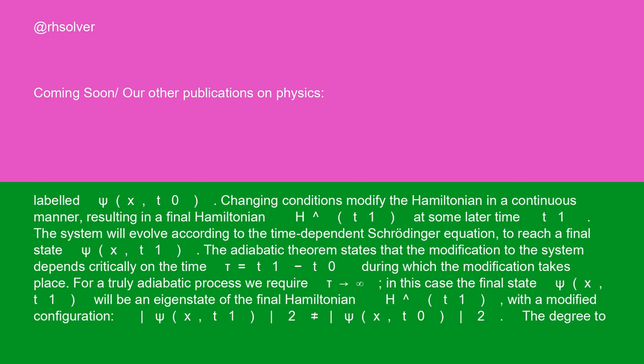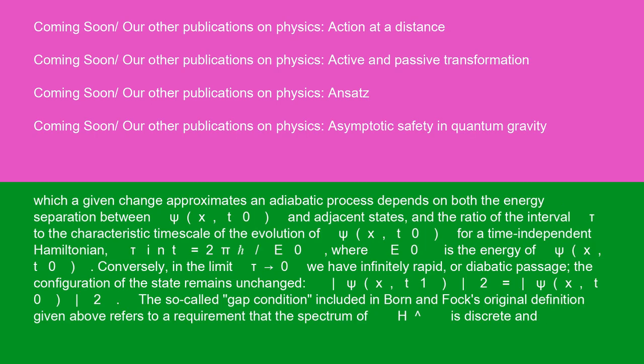The degree to which a given change approximates an adiabatic process depends on both the energy separation between psi(x, T0) and adjacent states, and the ratio of the interval tau to the characteristic time scale of the evolution of psi(x, T0). For a time-independent Hamiltonian, tau_int equals 2π/E0, where E0 is the energy of psi(x, T0).